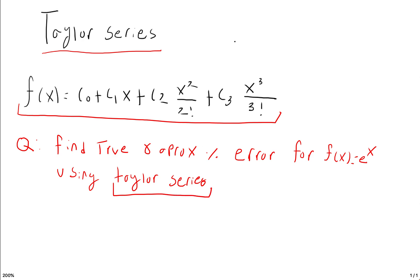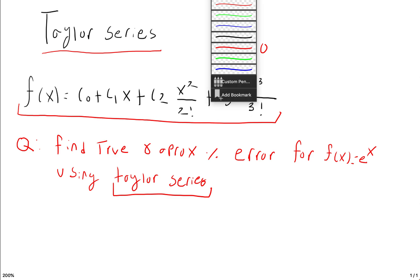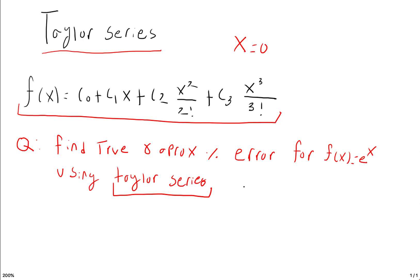So let's say we're given a question: find the true and approximate percent errors for the function e to the x using Taylor series, and find the first two iterations. We're told to evaluate this for x is equal to 0.5.